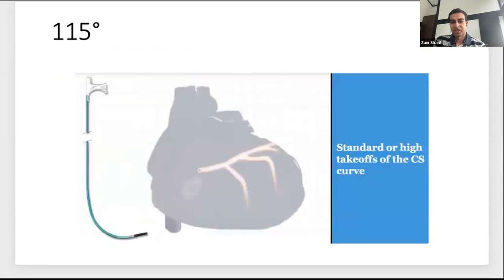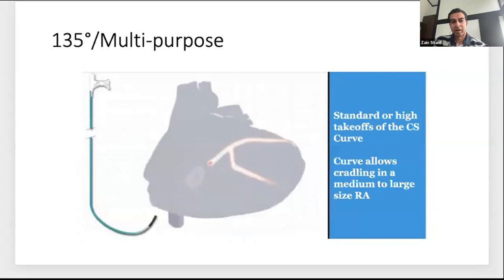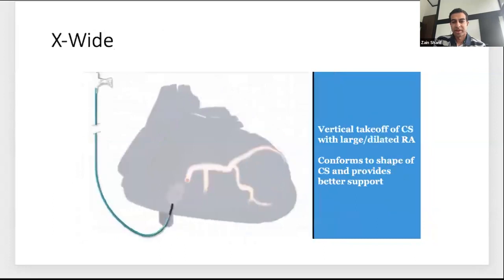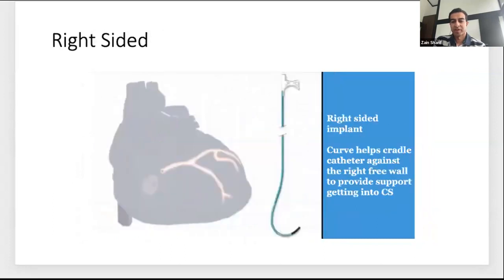Different delivery sheath curves depend on the location and takeoff of the CS. Steeper sheaths are available for higher takeoffs. For medium to large right atriums, a 135-degree multi-purpose can be helpful. Wider hooks work well for more vertical CS takeoffs, and there are extra-wide options. Many companies now offer right-sided sheaths as well.